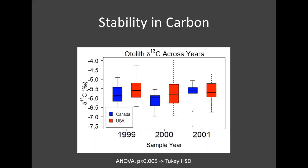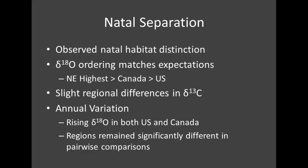To wrap up Part 1 and think about the evidence for distinct natal habitats: we did see isotopic differences between the regions ordering roughly as expected, we saw slight variation in delta-carbon-13 values, and we also saw this annual variation for oxygen isotopes, especially the rising pattern in the US and Canada. This annual variation is important for the next portion because it means any age-specific work needs to be specific to that given year class, since signals change over time.